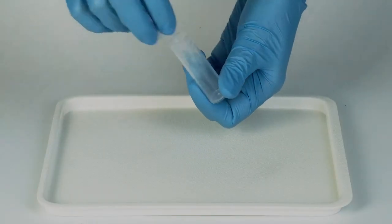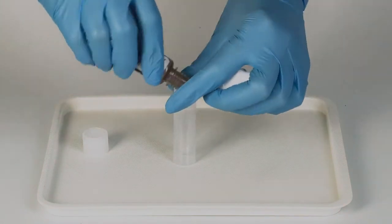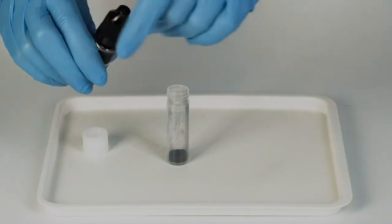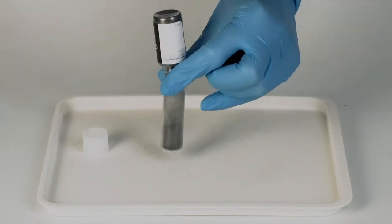Pour the entire bottle of manganese dioxide into the plastic vial, slightly tapping the sides of the bottle. Then add the entire bottle of graphite.